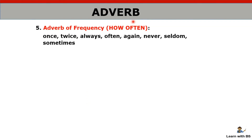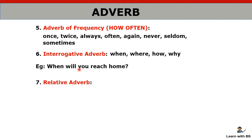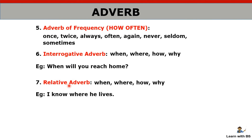Then adverb of frequency — answers 'how often' — like 'once in a week', 'twice in a week'. Interrogative adverb — asks a question — like 'Where does she come?', 'Where will you reach?' — it asks questions, so it is interrogative adverb. And relative adverb — which shows relation — like 'I know where he lives' — 'where' shows the relation between the two parts of the sentence, so it is a relative adverb.